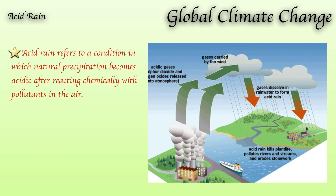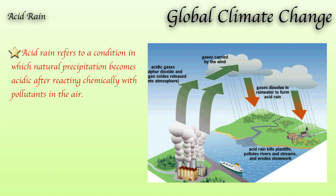Acid rain refers to the condition in which natural precipitation becomes acidic after reacting chemically with pollutants in the air. When we produce large amounts of gases like sulfur dioxide and nitrogen oxides, they react with water vapor and convert themselves into sulfuric acid and nitric acid. This acid is dissolved in the rainwater and comes to the ground in the form of acid rain, which is not good for the atmosphere or the ecosystem.